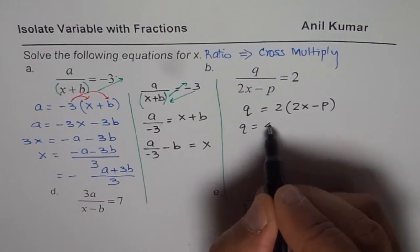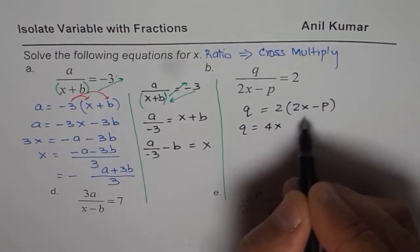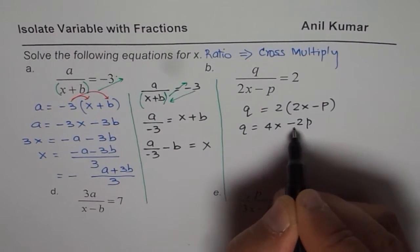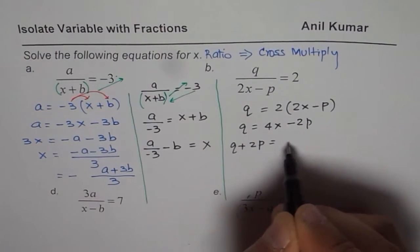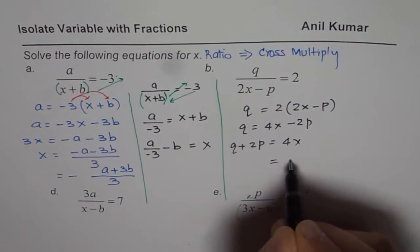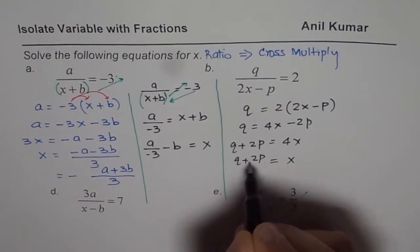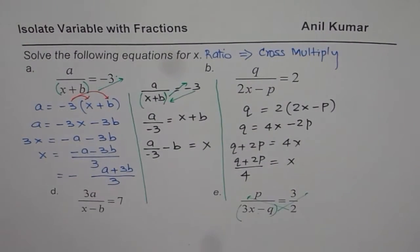We have 4x and then we have minus 2p. Bring 2p to the left side. So q plus 2p equals 4x and then x equals q plus 2p divided by 4. Perfect.